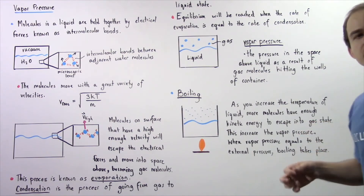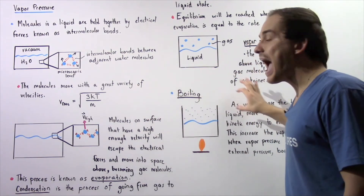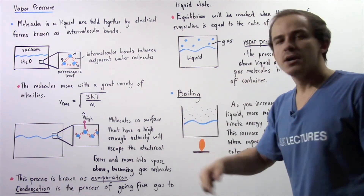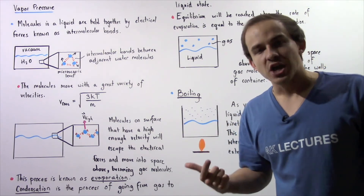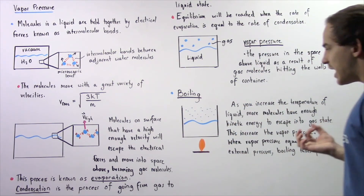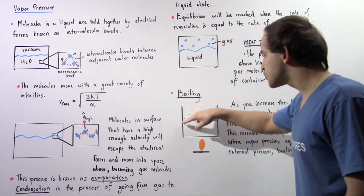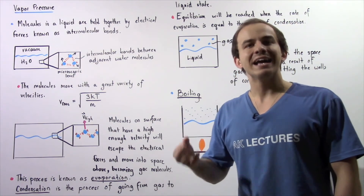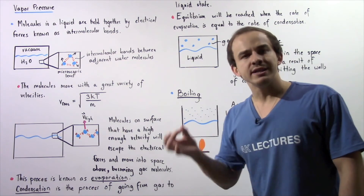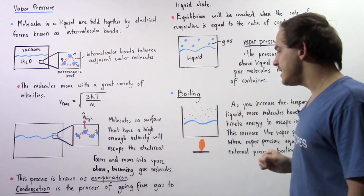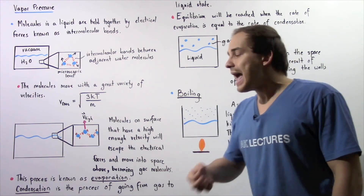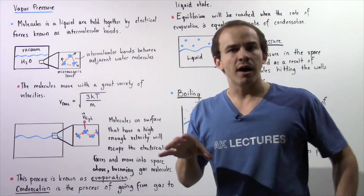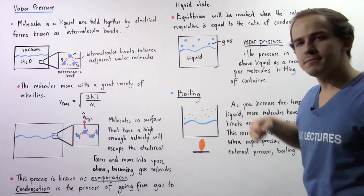When the vapor pressure equals the external pressure — in this case, the atmospheric pressure — boiling takes place. At this point, the molecules inside the liquid, not only on the surface but also inside the liquid, when they have a high enough kinetic energy will readily escape. Bubbles of gas will form inside the liquid, and these bubbles will rise into the space above. This is known as boiling.